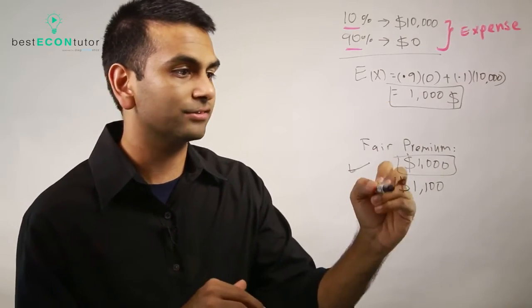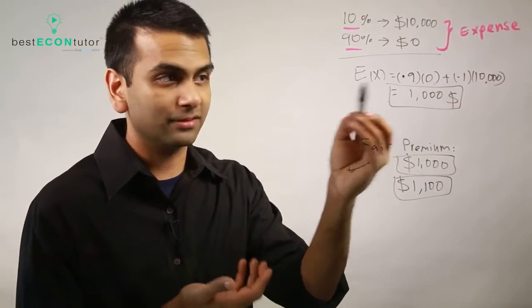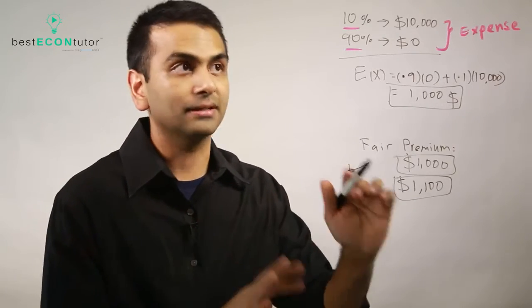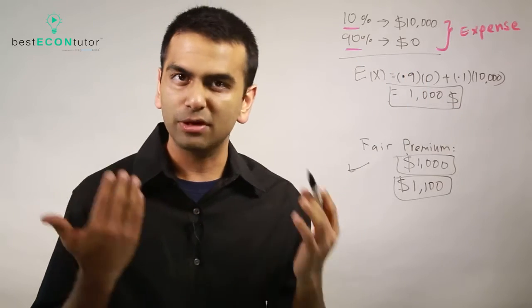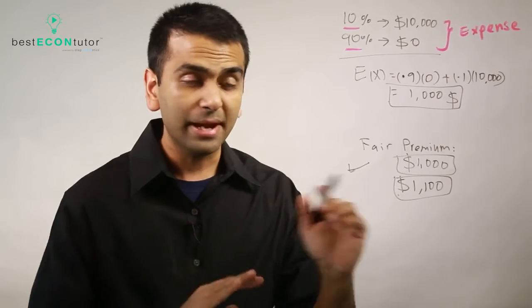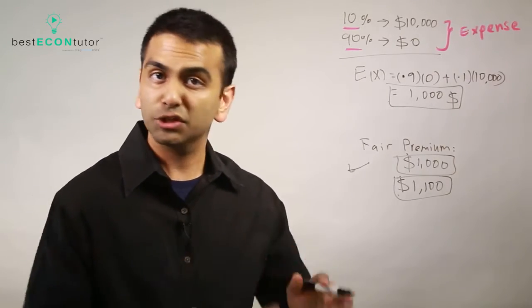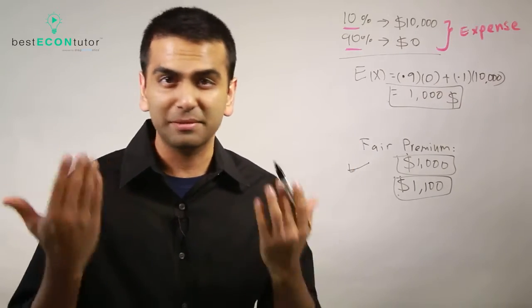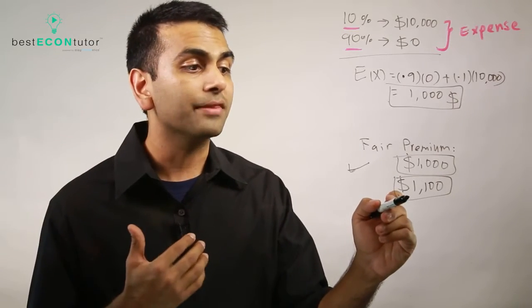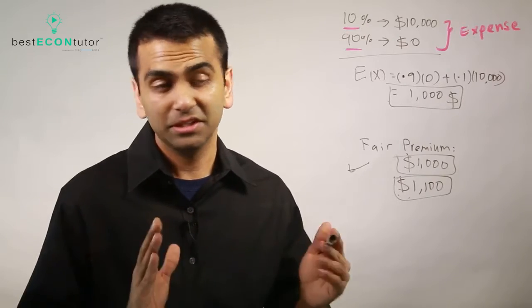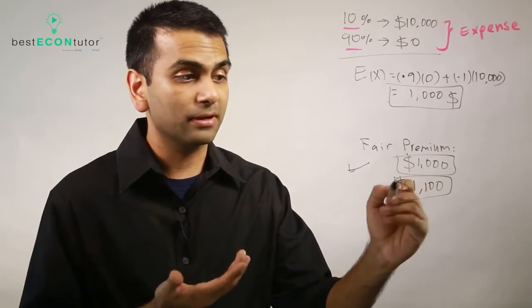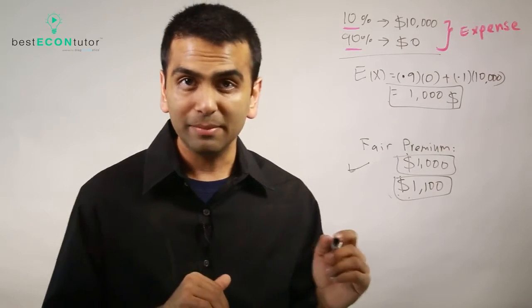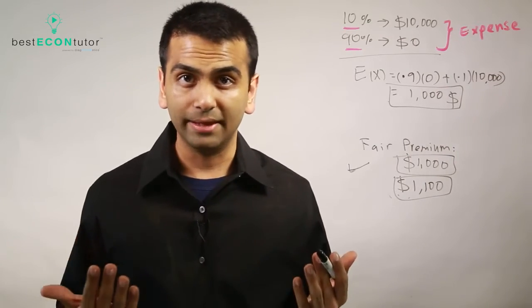If I were risk neutral I'd definitely prefer paying a thousand over eleven hundred, since I want the lower expected expense. But since I'm risk averse, I'm willing to pay an extra hundred to never be stuck with a ten thousand dollar bill. I'd rather pay eleven hundred dollars every year no matter what than wake up wondering: is my car totaled or not? I'm paying a premium to eliminate the risk.